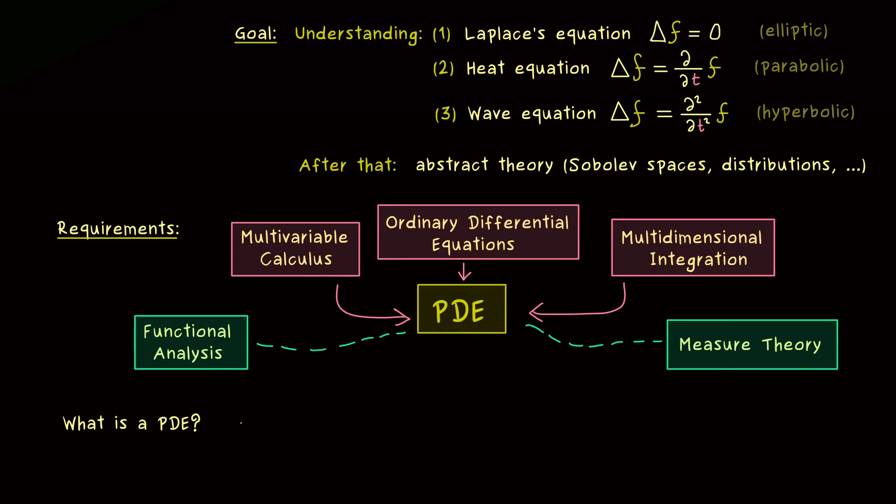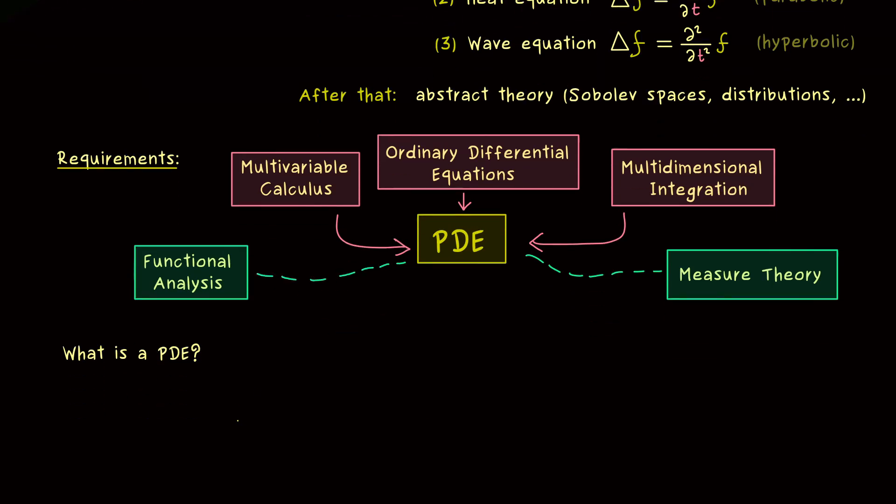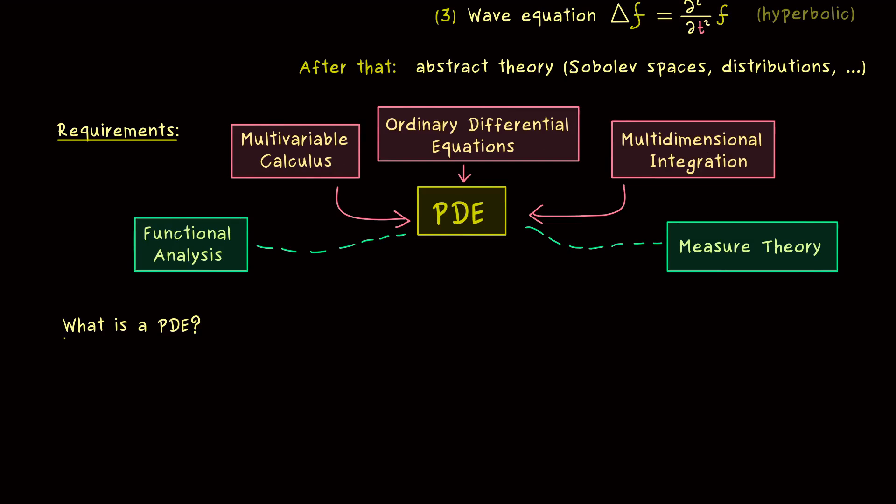Ok, so with that out of the way, we can immediately go to the first definition to answer the question, what is a PDE? This definition is quite easy to explain, because we already know that partial derivatives should play a role. And these partial derivatives come from an unknown function we call u. And the domain of u we call omega,